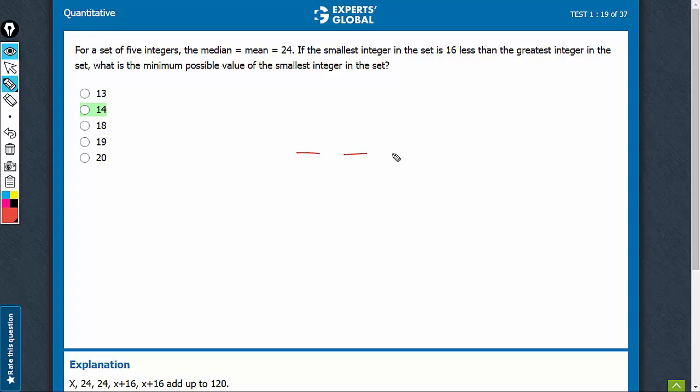There are five integers. Median as well as mean are 24. So the middle term is 24, and they are adding up to 24 into 5, which is 120.